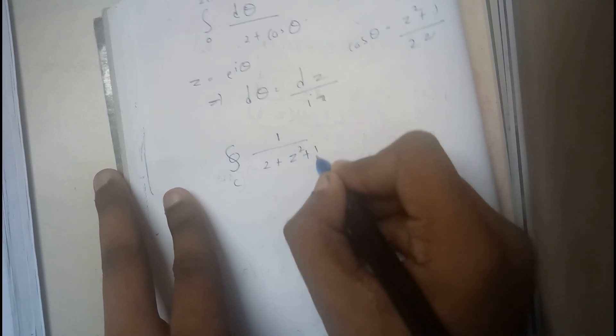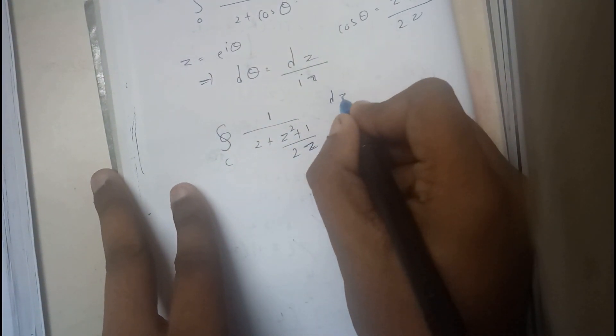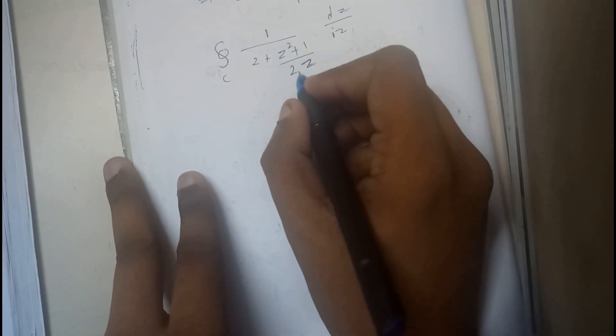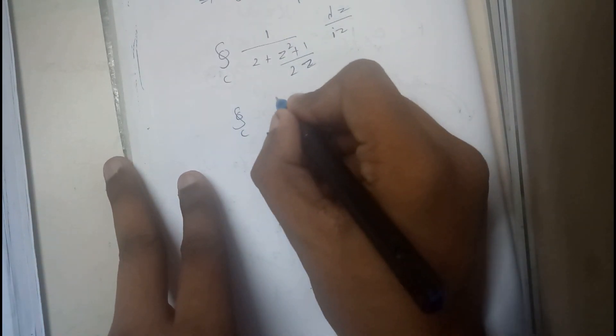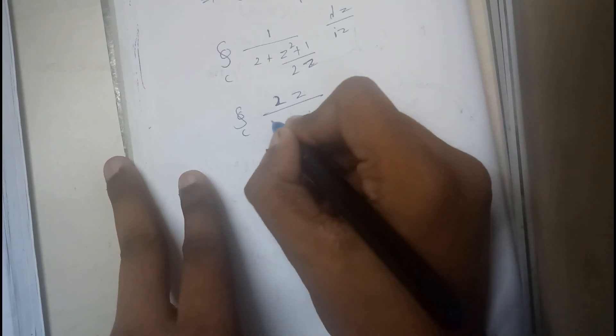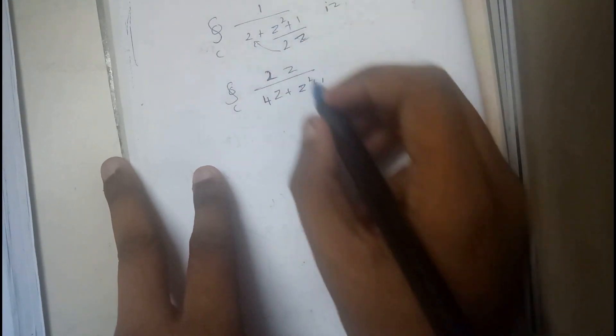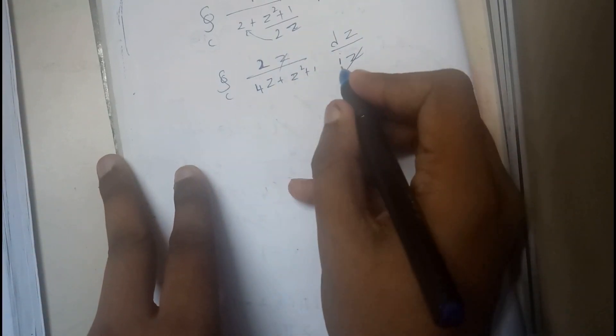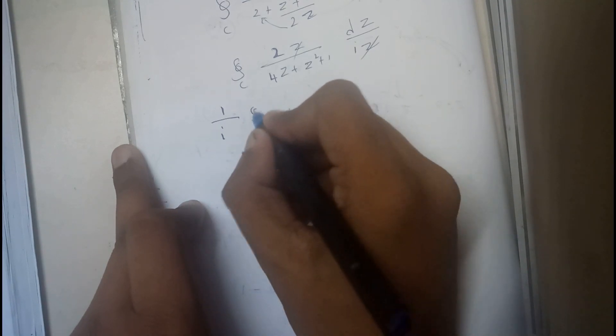So now let us try to change this. It will be nothing but 1/(2 + (z² + 1)/(2z)) into dz/(iz). So now we will be doing LCM and let us push it into the numerator. We will be getting 2z/(4z + z² + 1). I have just multiplied and sent it to the numerator. I can cancel z, so i will be the normal thing. I can just push it out of my integral.